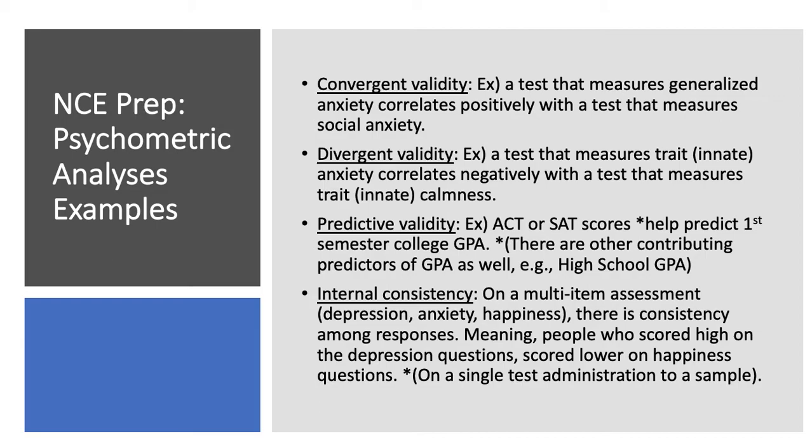What we're looking at is whether there is consistency among the responses. This is given to a sample — hopefully a large diverse sample — just one test administration, and then we would see if people score as we would expect them to. For instance, if the sample were showing high scores on depression, we would expect to see lower scores on the happiness domain, so the questions measuring happiness would have lower scores.